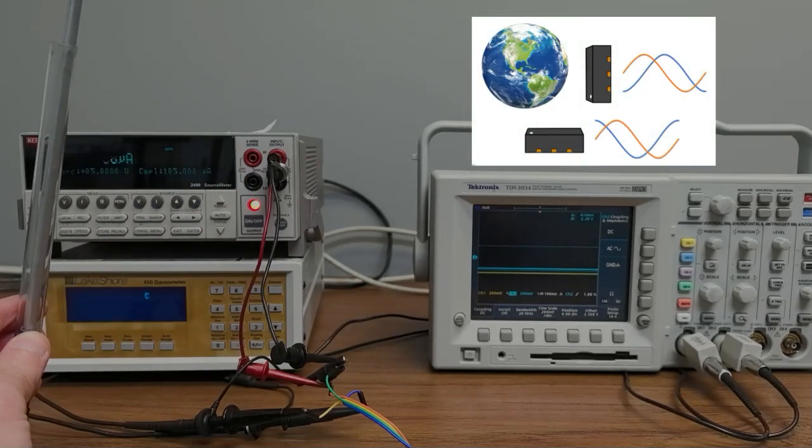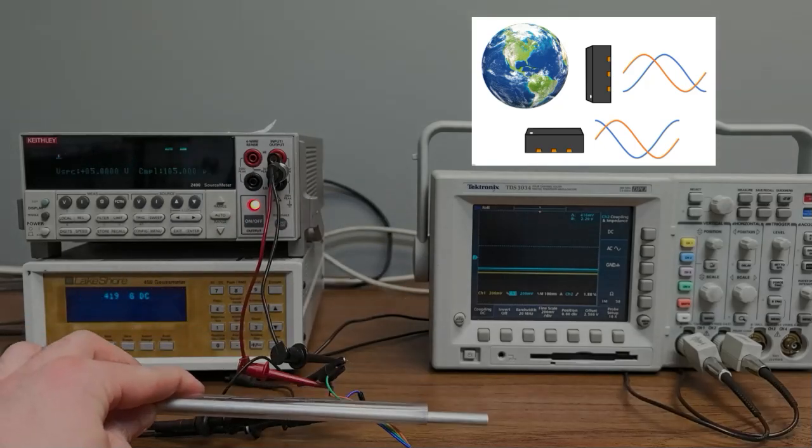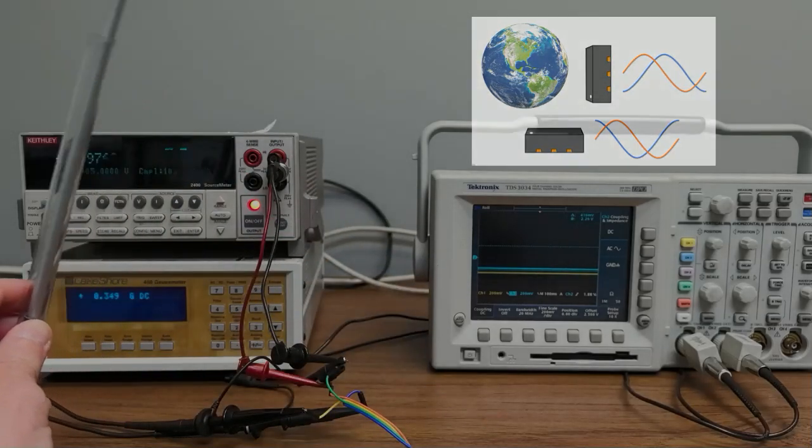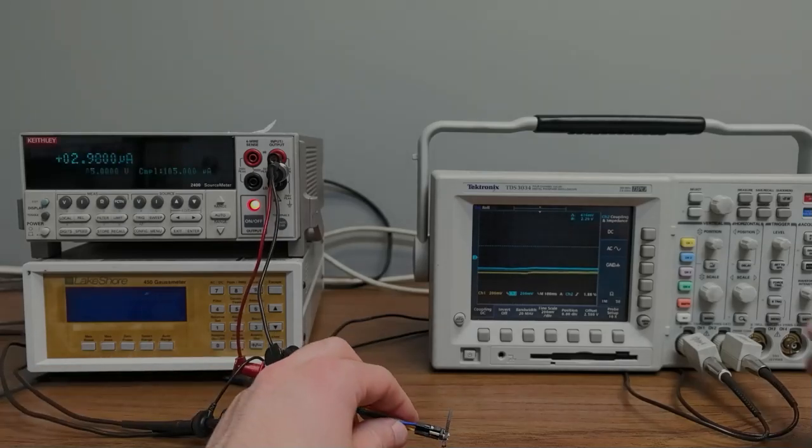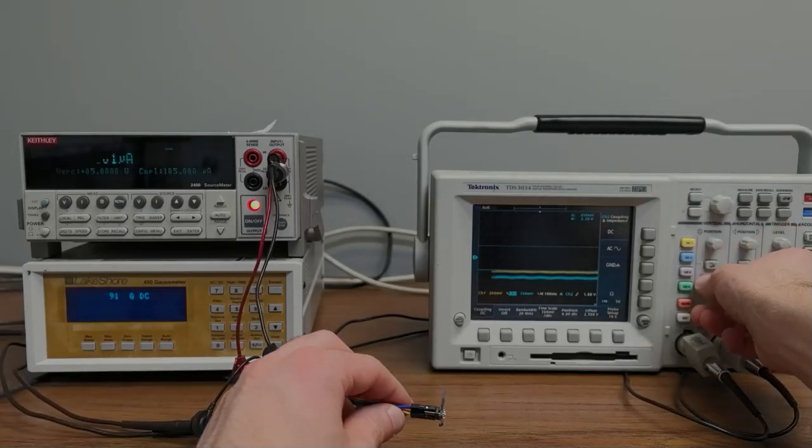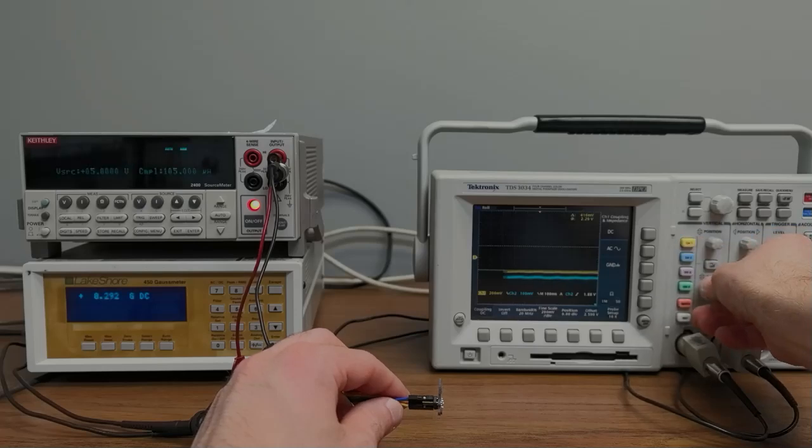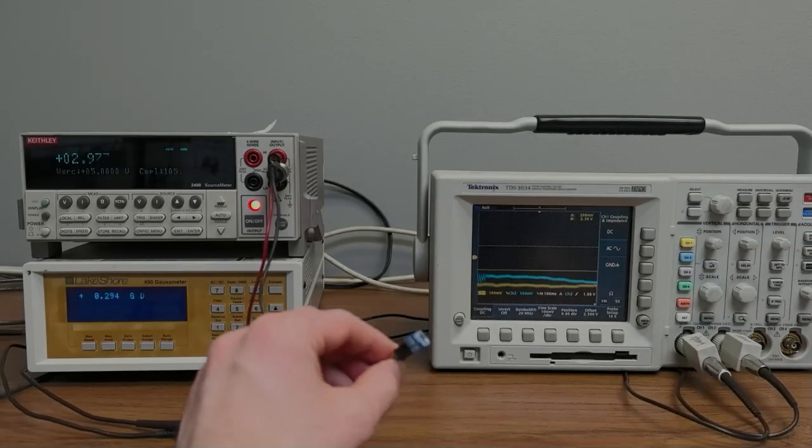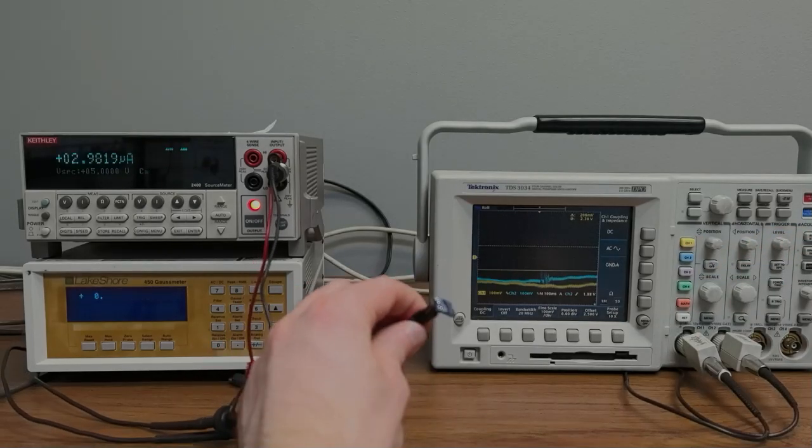We can easily measure rotations in earth's magnetic field. That's only 50 micro tesla and we're getting over 100 millivolts peak to peak signal.